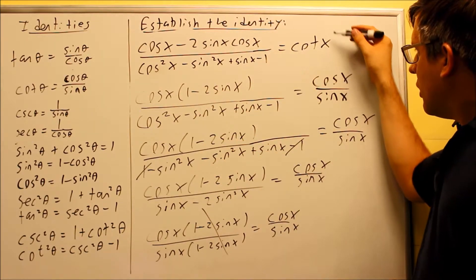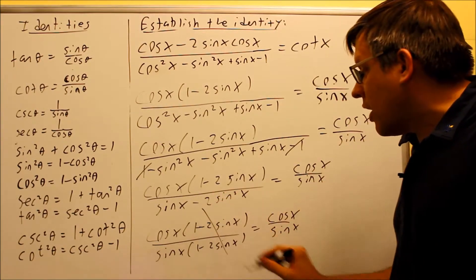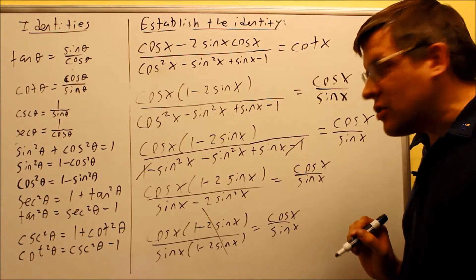I kept the cotangent, changing the cosine over sine, I kept that all the way down to the bottom. Once you cancel that out, you can show that both sides equal to each other.